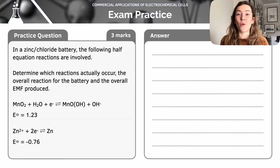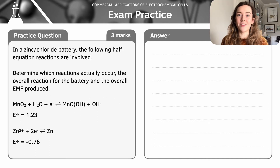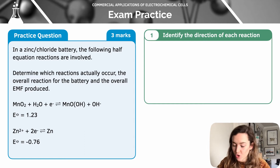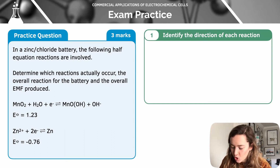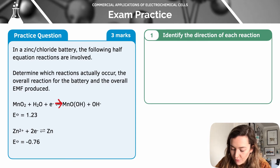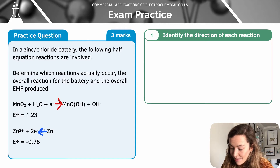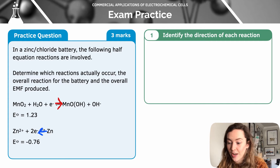Here's a practice question — pause the video to have a go yourself or wait for the worked example. I can identify that the manganate reaction has the more positive standard electrode potential, so the reaction is going to occur in the forward direction — reduction is happening there. For zinc, with the less positive value, we're going to have the backward reaction — oxidation is happening there.